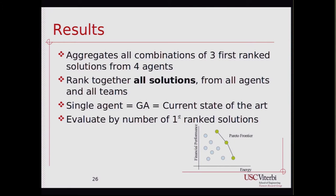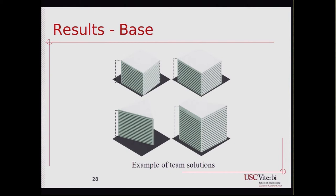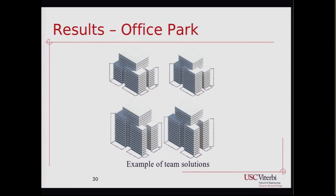These are the results for the base model. The diverse and uniform teams are able to find a much larger number of first-ranked solutions than each individual agent — agent one, for example, has no first-ranked solutions at all when we rank everything together. Some examples of the design variations that the diverse team outputs are shown. For the Office Park model, which is more complex, the diverse and uniform teams again find a much larger number of first-ranked solutions.